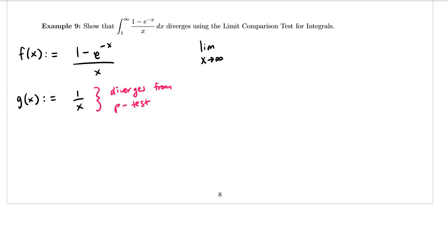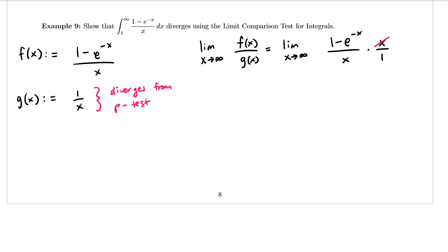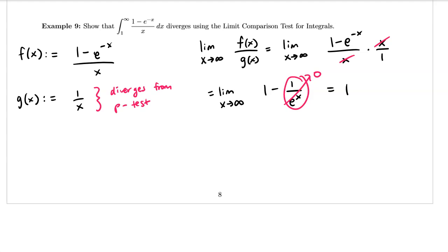Let's take the limit as x approaches infinity of f(x) over g(x), which equals the limit as x approaches infinity of [(1 minus e^(-x)) over x] multiplied by the reciprocal of g(x). The x's divide out, leaving the limit as x approaches infinity of (1 minus e^(-x)), which I'll rewrite as 1 minus 1 over e^x. As x goes to infinity, that fraction goes to 0, so our limit equals 1, which is a positive finite number.